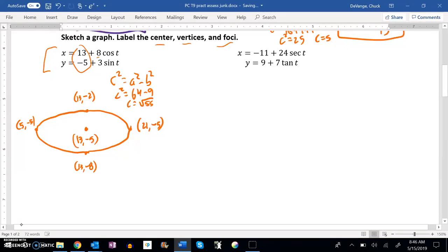So I'm going to just put my foci in here somewhere. I'm going to say that's about root 55. And as I label it, I know that it's a change in x. So I have 13 plus root 55, still at negative 5. And I have 13 minus root 55, still at a height of negative 5. And there's my sketch for that.